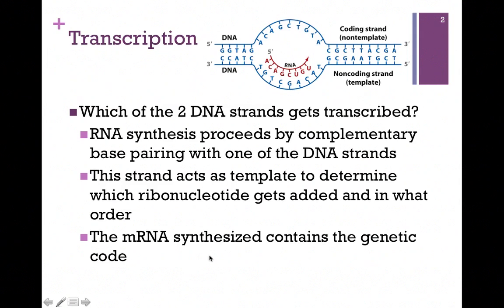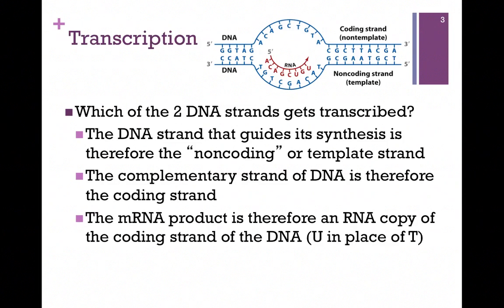This is how RNA polymerase determines which nucleotide to add and in which order in our RNA molecule. This is the messenger or mRNA molecule and it contains the genetic code that will be later translated into a sequence of amino acids. We refer to this DNA strand that guides synthesis of the RNA molecule as our template strand — it is serving as the template to drive synthesis of the mRNA.